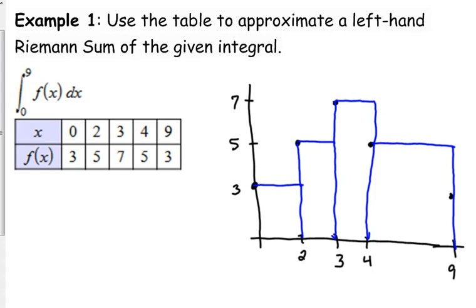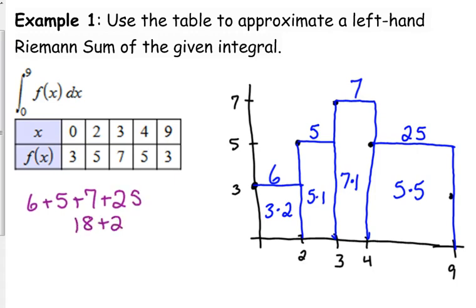Let's calculate the area of that first rectangle. It has a height of 3, it has a width of 2, so it has an area of 6. The second one has a height of 5, but it has a width of 1, so it's an area of 5. The next one has a height of 7, has a width of 1, so that's an area of 7. The last one has a height of 5, and a width of 5, so that gives us 25. When we add all those together, we get 6 plus 5 plus 7 plus 25, that's 18 plus 25, which is 43.